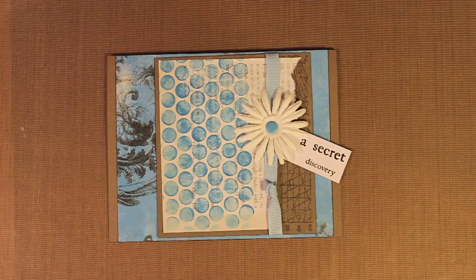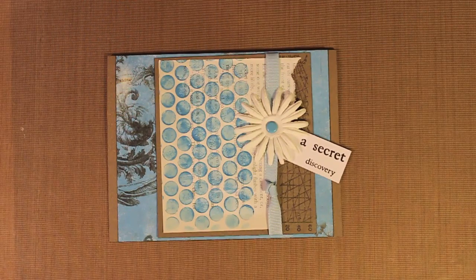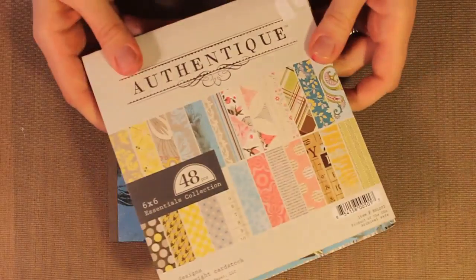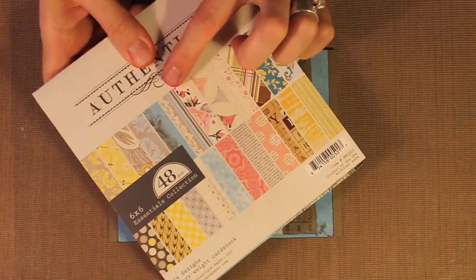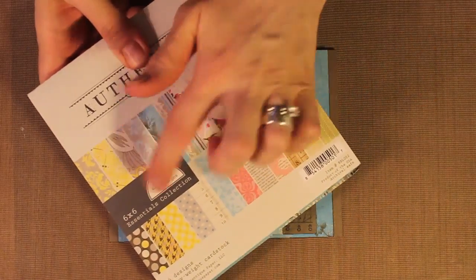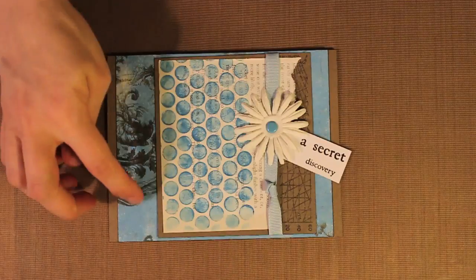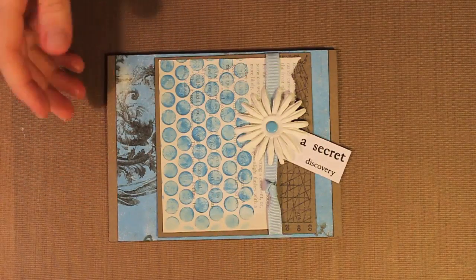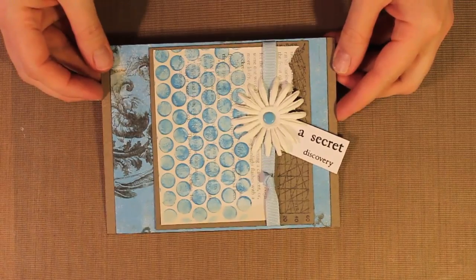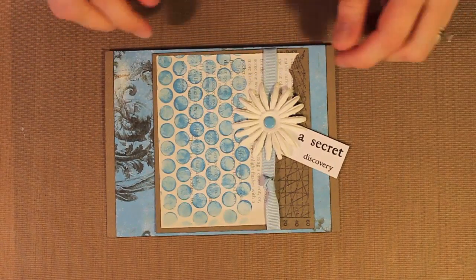The background paper looks like it's been stamped. It goes with this design really well and this is from Authentique and this is their Essentials Collection. So it's a 6x6 pattern design. So it's got this design already on it and I just used a brown piece of cardstock for my card base.